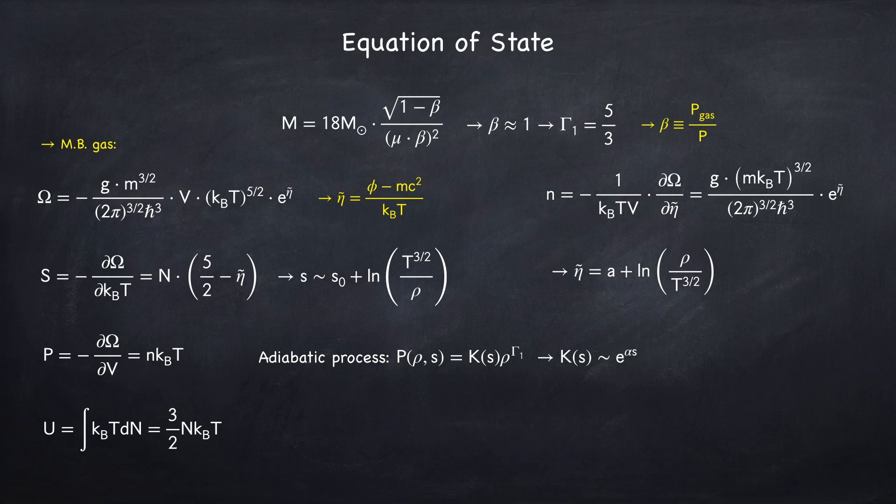Now, I'm going to remind you again what gamma 1 is. It's the adiabatic index, and it's related to how the pressure changes with density, assuming constant entropy, meaning with no heat flow.